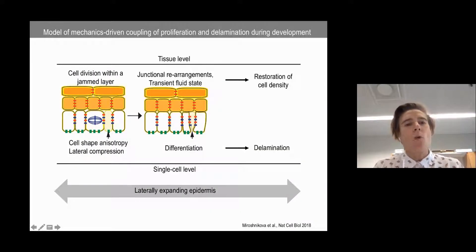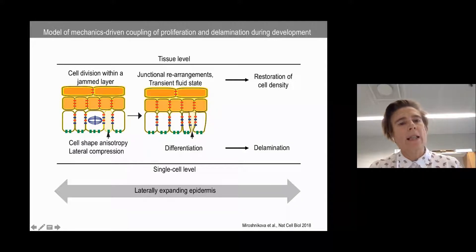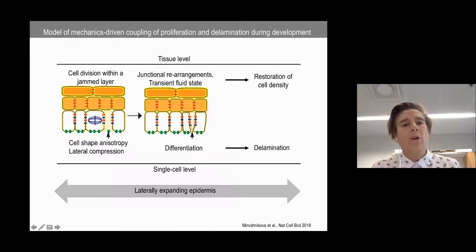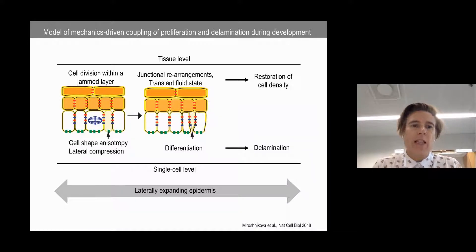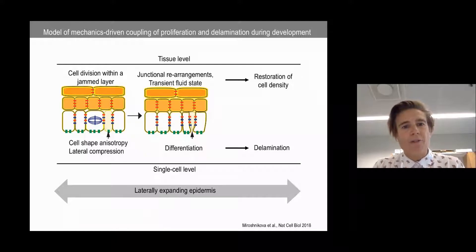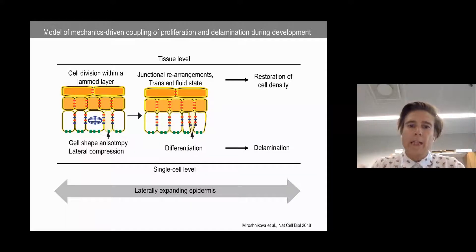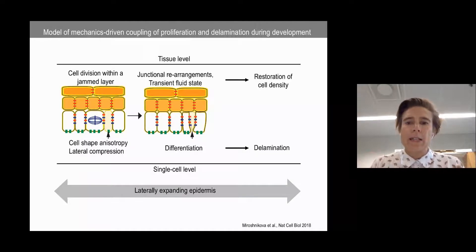With this and a lot of additional work, we hypothesize that cells constantly sense their geometry. If there is a lot of proliferation and no need for lateral expansion, this will compress and force cells into elongated shapes, and this elongation is a signal for the cells to differentiate and move upwards. The system can thereby self-adjust to changing needs of the tissue.